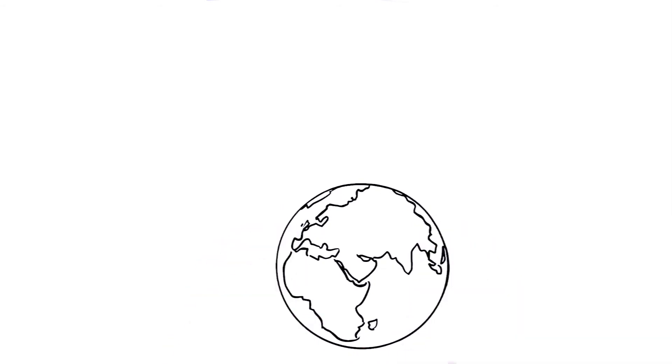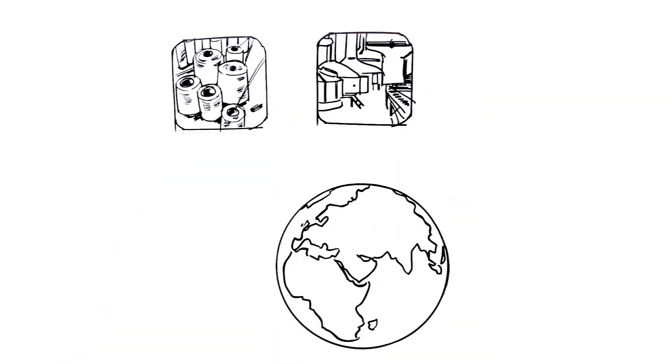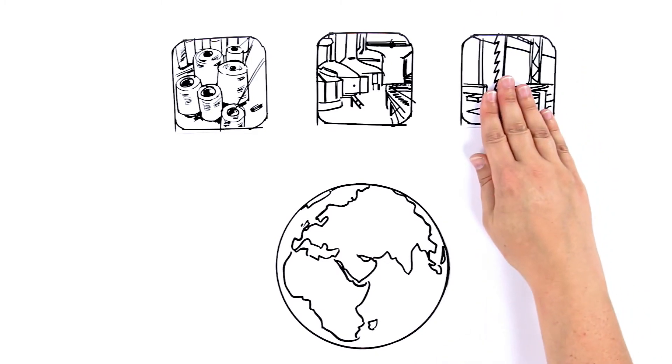Every day, industrial production facilities worldwide are running at full speed to produce products for everyday life, such as textiles, food, even timber products.